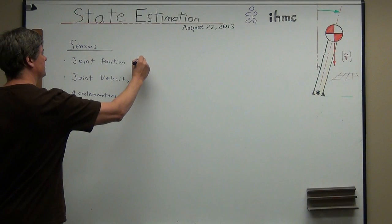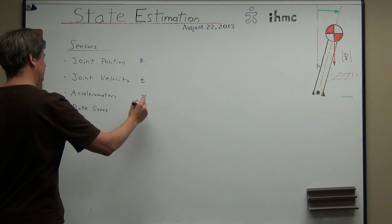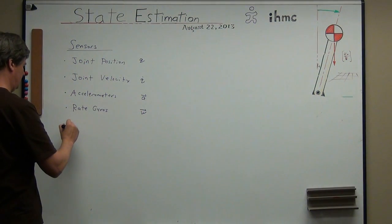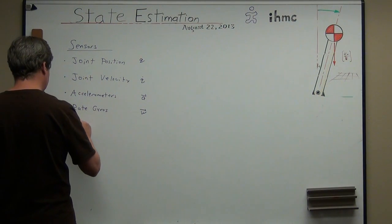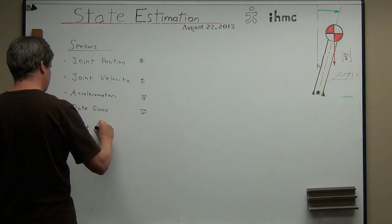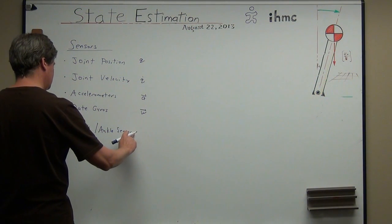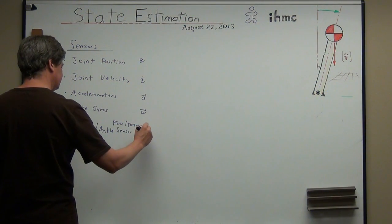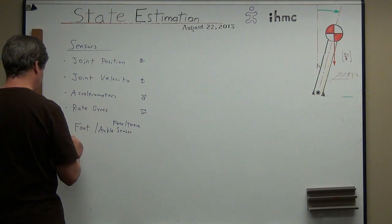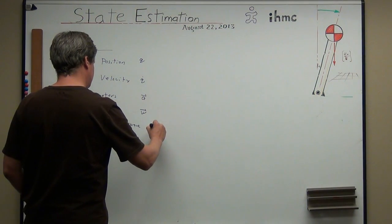So joint positions, let's call it Q; velocity's Q-dot. Accelerometers, A-vector; rate gyros, omega. What else? Foot sensor, force sensor — some sort of force or ankle sensor. Force torque — let's just call it a wrench on the foot.